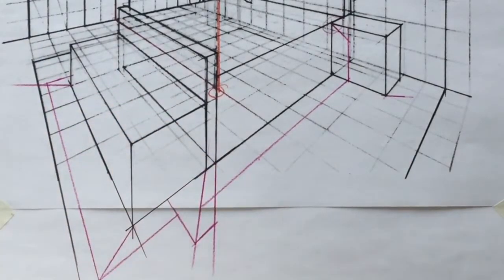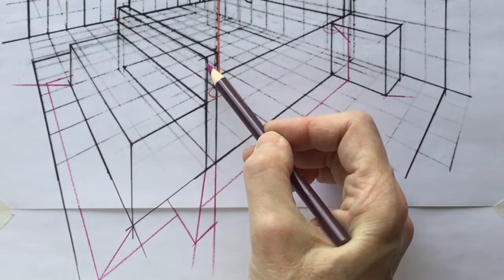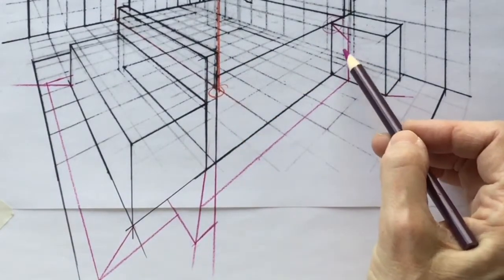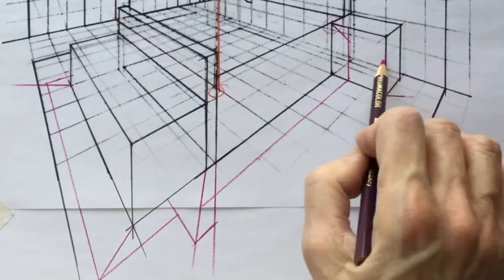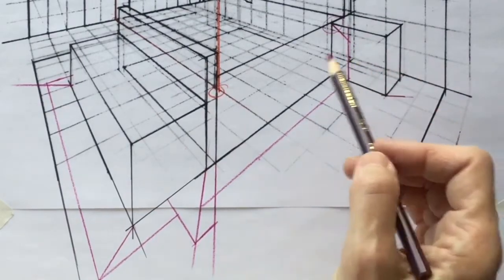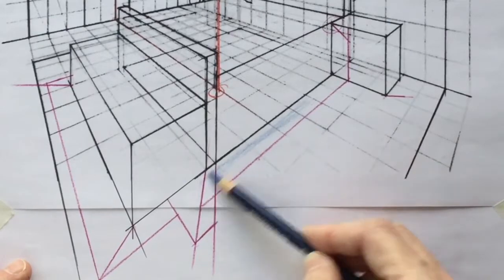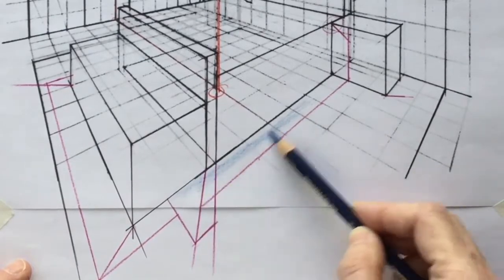Okay, so now we have a shadow for this box, a shadow for the headboard—the footboard, pardon—and shadow for the bed itself, and the shadow that's cast onto the bedside table. We're not going to see what's happening on the other side, so this should suffice for us.